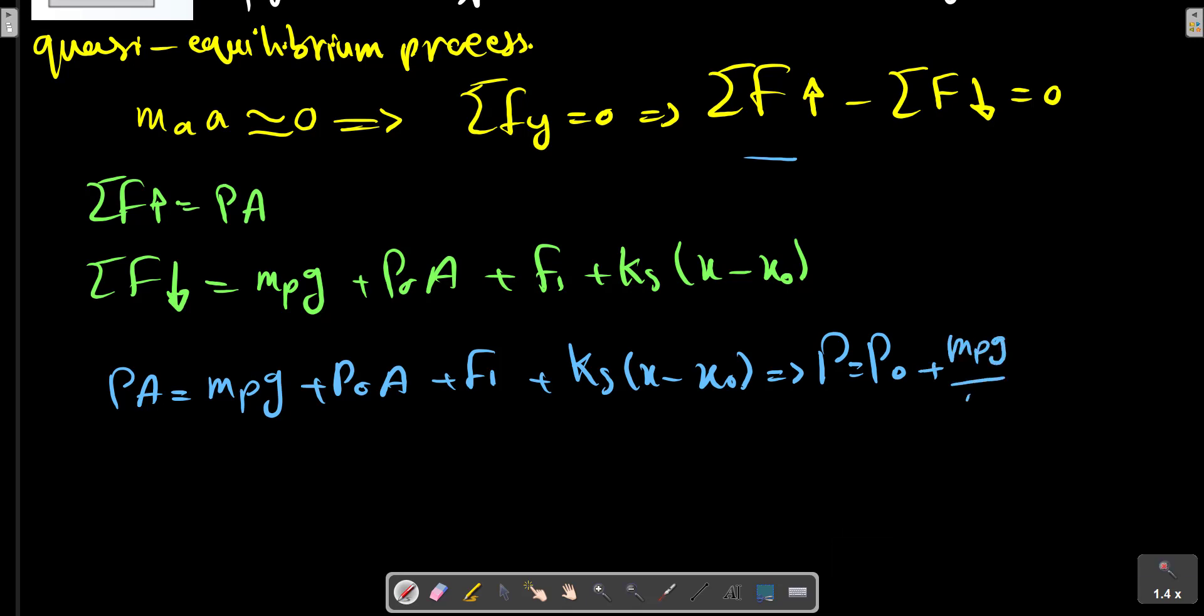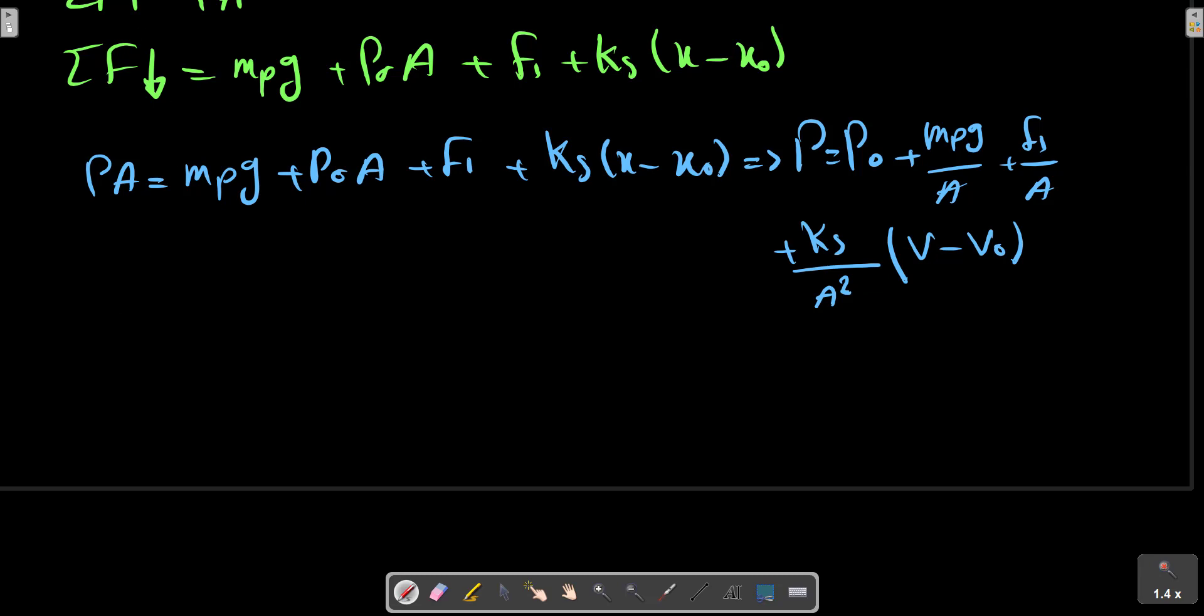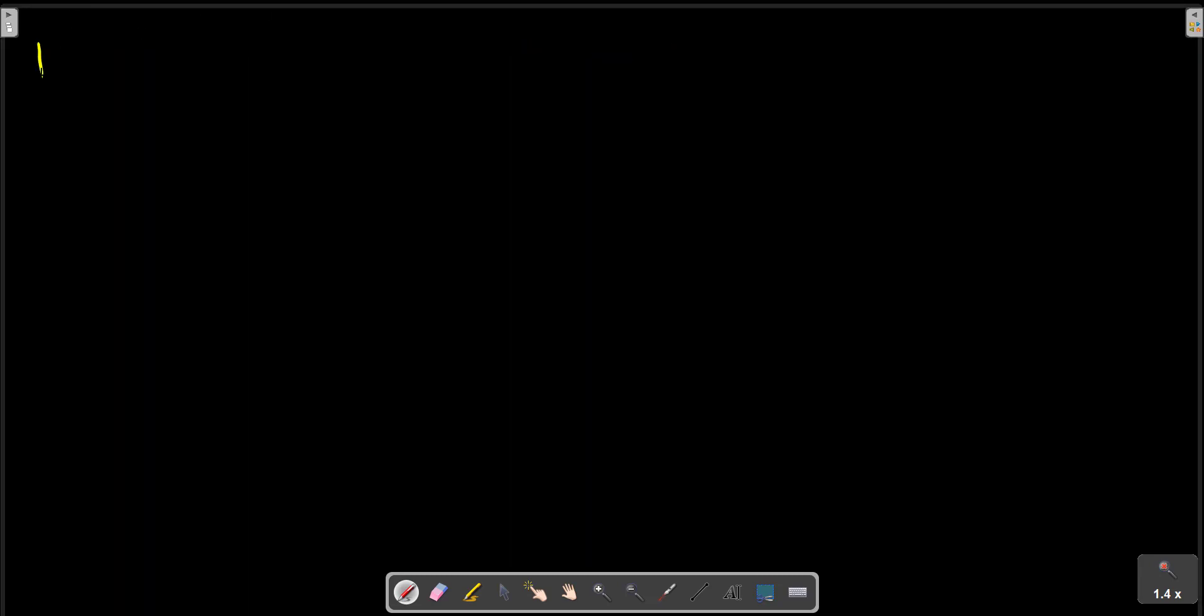P equals P0 plus mp·g over A plus F1 over A, plus k·X over A. Then we multiply by A again in the relation and obtain V minus V0.